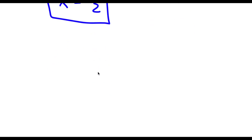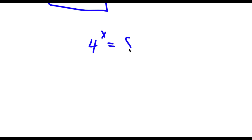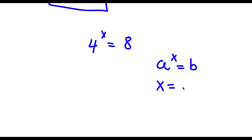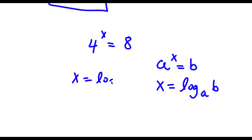Now another way of solving this problem: I have 4 to the power of x equals 8. If I have something in the form a to the power of x is equal to b, this means that x is equal to log base a of b. So in this case x is going to equal log base 4 of 8.